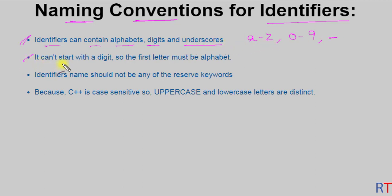Second, an identifier cannot start with a digit. For example, we cannot have an identifier like '1number'. We cannot start an identifier with a digit; the first letter always has to be an alphabet.